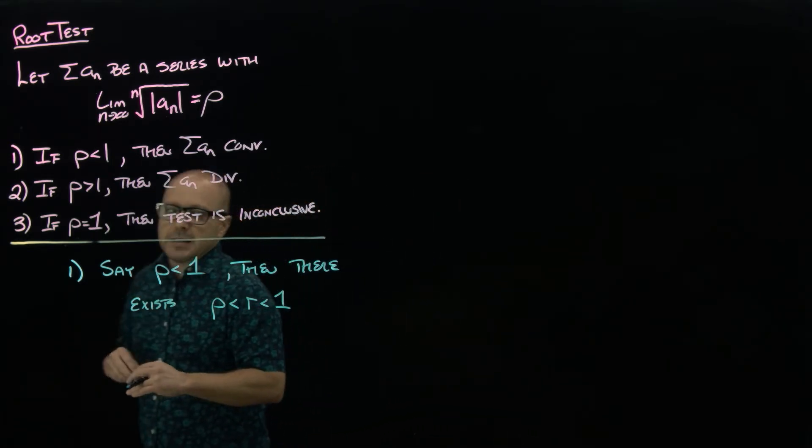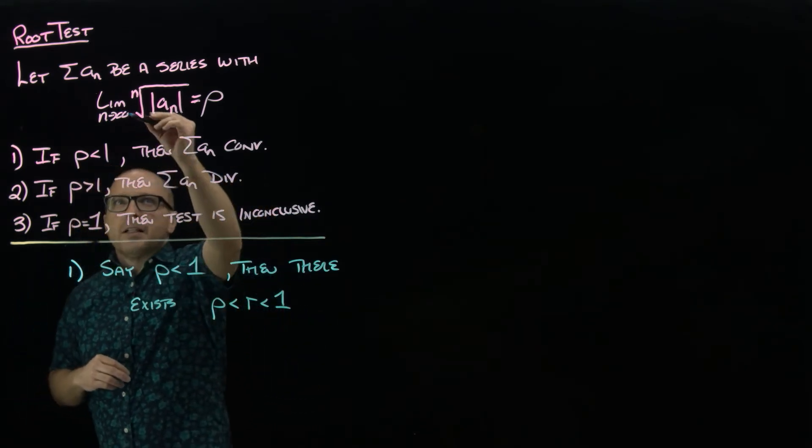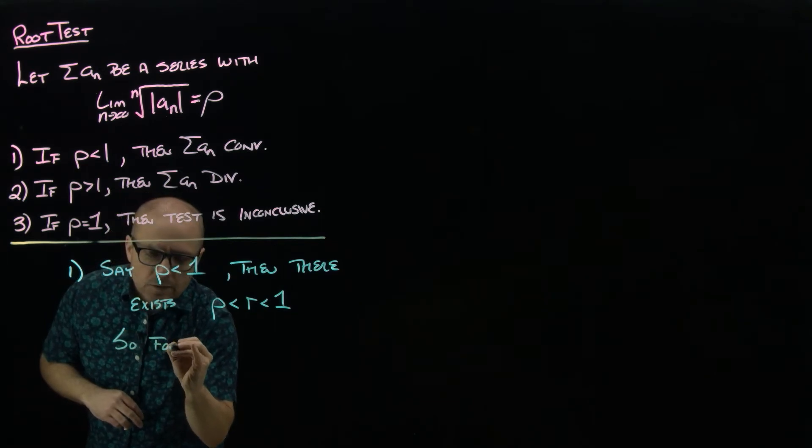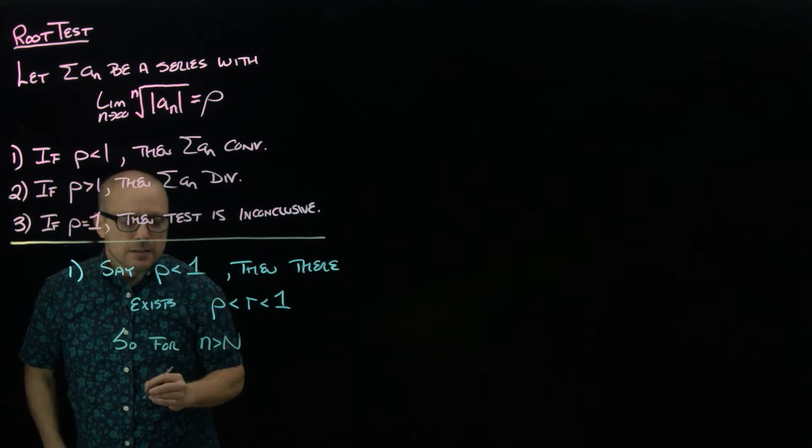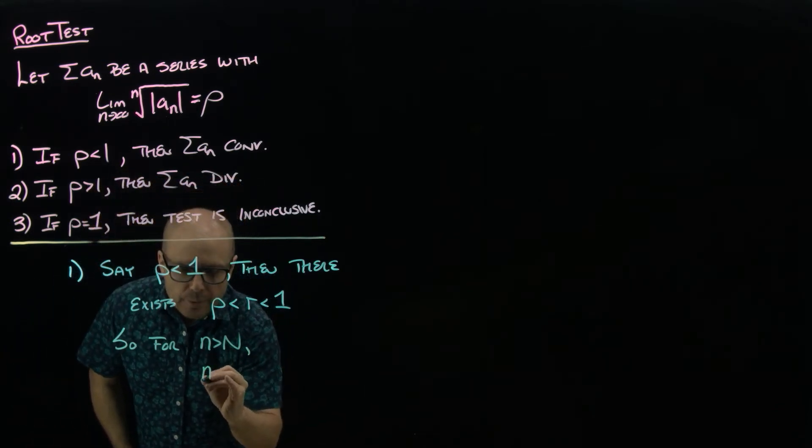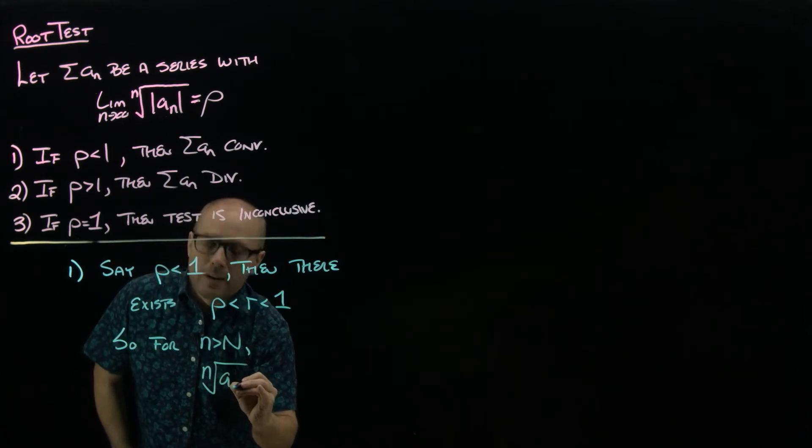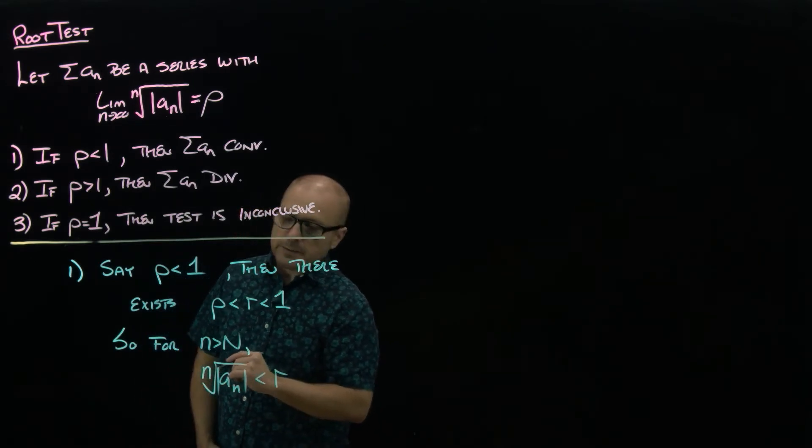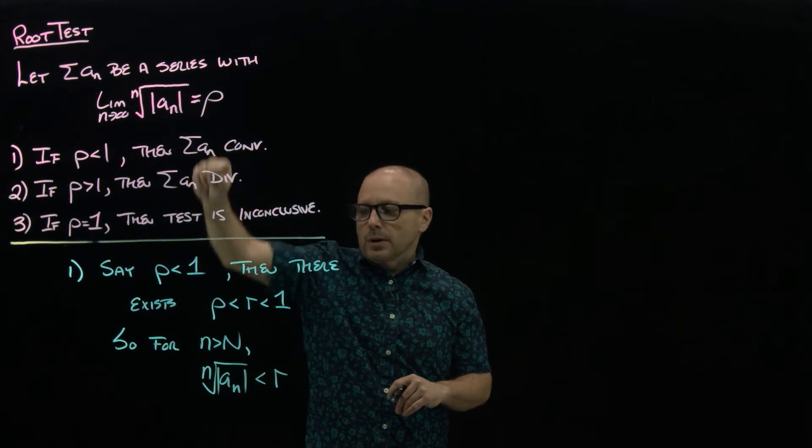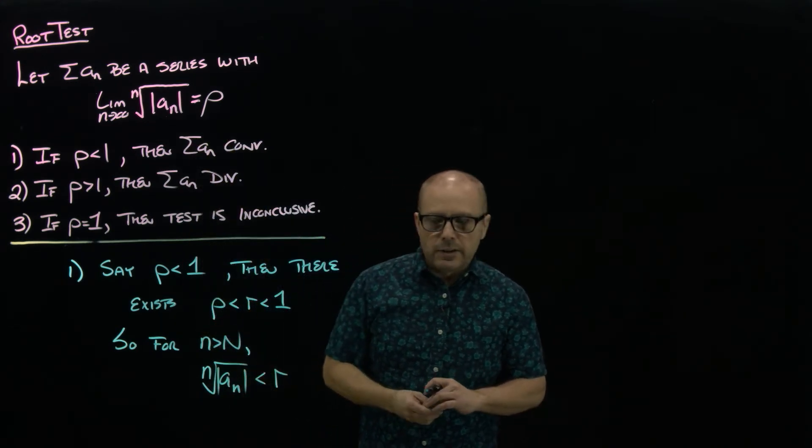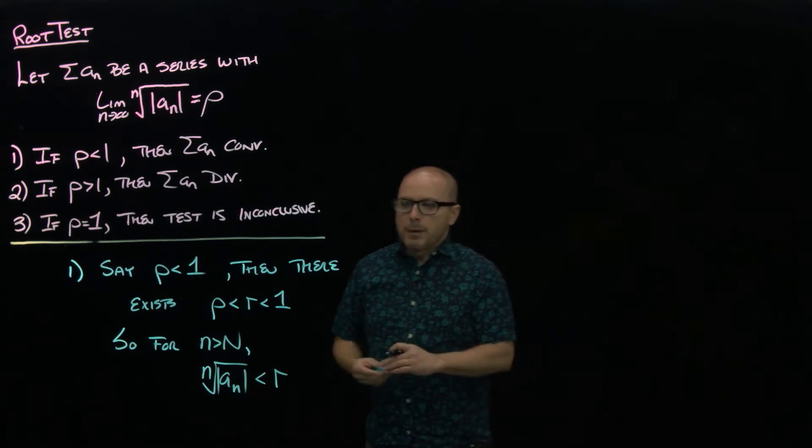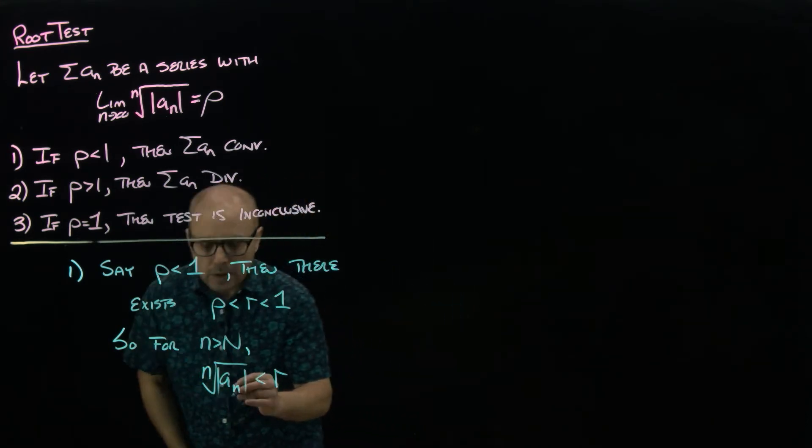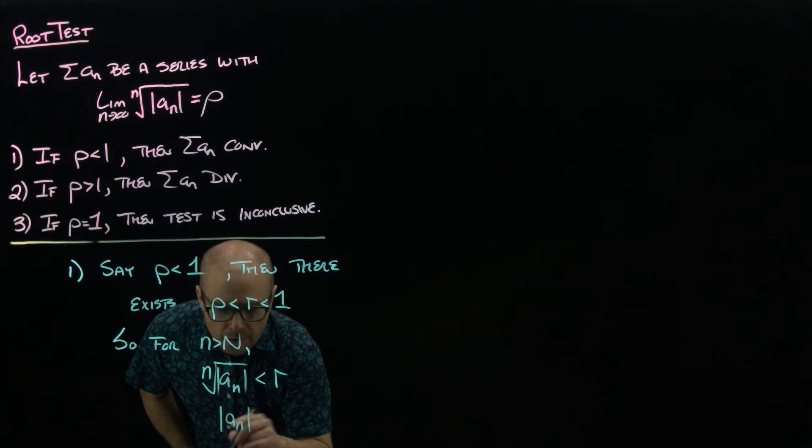Okay, so what does that mean? Again, we're similar to our proof from the ratio test. These guys here will eventually—so for n bigger than some big N—the nth root of the absolute value of a_n is going to have to be less than r, right? If these are getting closer and closer to ρ and ρ is less than r, they're eventually all less than r.